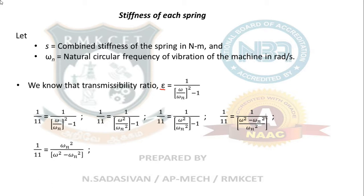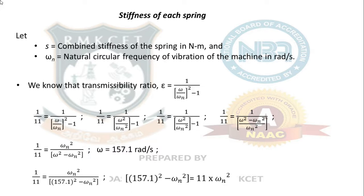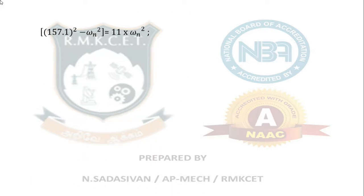What I am doing is taking LCM in the denominator and manipulating mathematically. I am bringing the square inside and then taking the LCM, so the denominator becomes (ω² - ω_n²)/ω_n². Taking it to the numerator: ω_n² / (ω² - ω_n²). Omega I know is 157, omega_n I don't know. So 1/11 = ω_n² / (157.1² - ω_n²). Cross multiply, rearrange everything, and solve for omega_n.